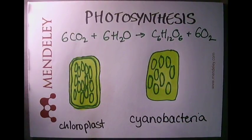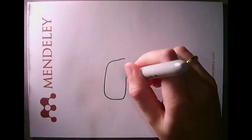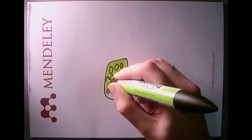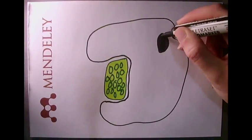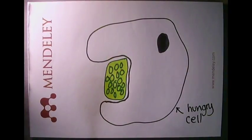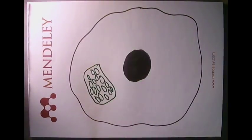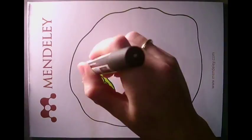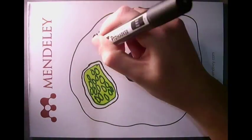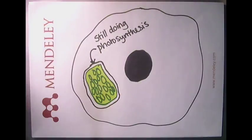Photosynthesis is the process of using the energy from sunlight to turn carbon dioxide and water into glucose and oxygen. Based on lots of scientific evidence, we now think that a cyanobacterium entered a larger cell and never left. It was useful for the big cell to keep the cyanobacteria around because now the big cell could take advantage of photosynthesis too.